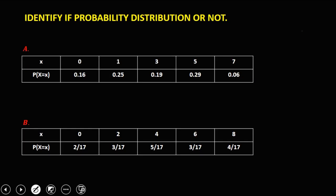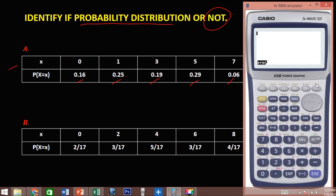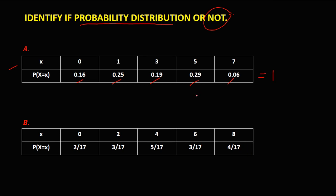We have this given — identify if the given is a probability distribution or not. For A, we're going to add all the probabilities and it should be equal to 1. So: 0.16 plus 0.25 plus 0.19 plus 0.29 plus 0.06. Since the sum is not equal to 1, therefore this given is not a probability distribution.